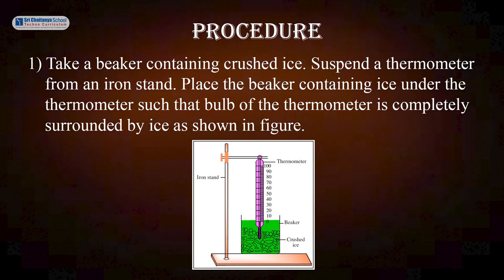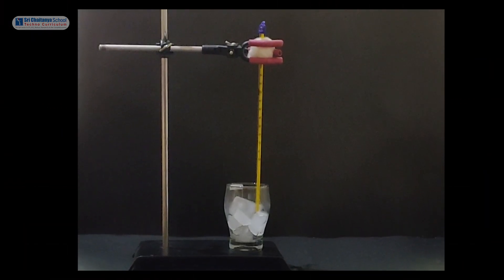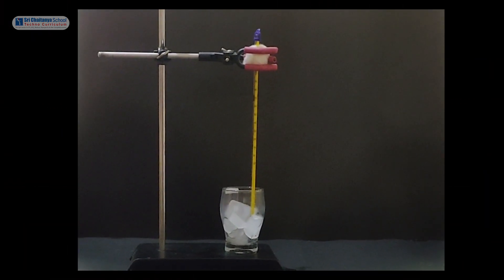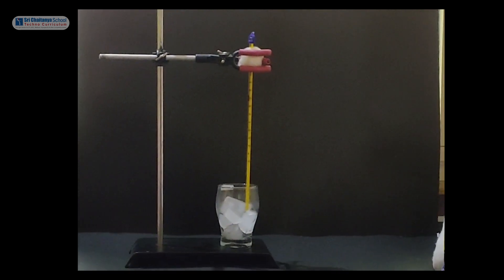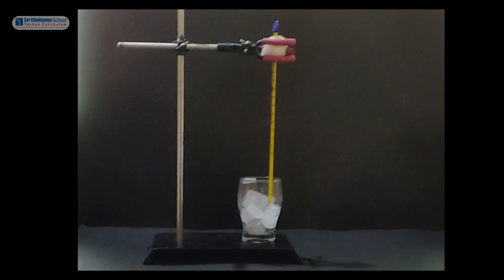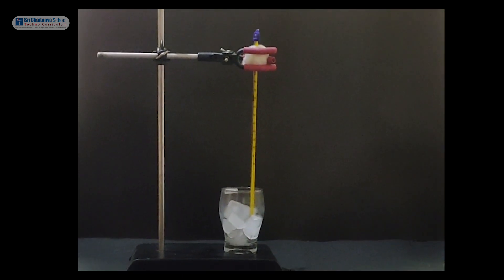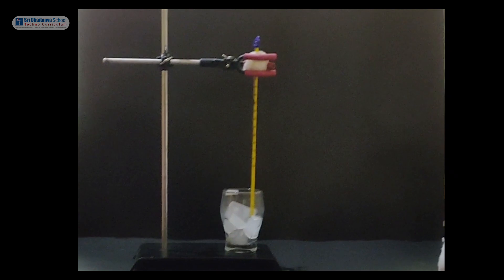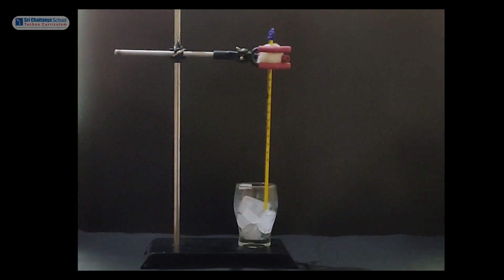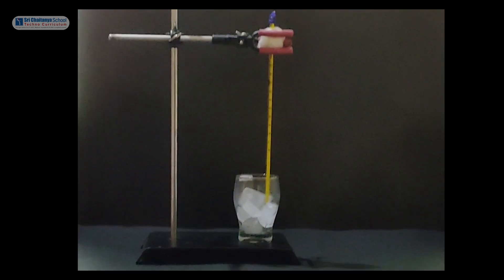Now it is time to see the procedure. Take a beaker containing crushed ice, suspend a thermometer from an iron stand, place the beaker containing ice under the thermometer such that bulb of the thermometer is completely surrounded by ice as shown in figure.